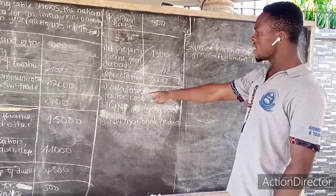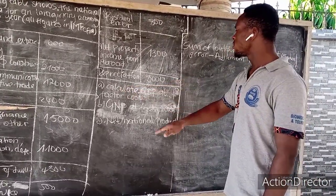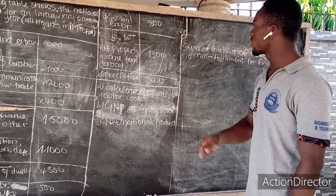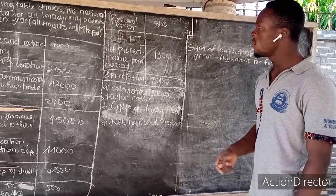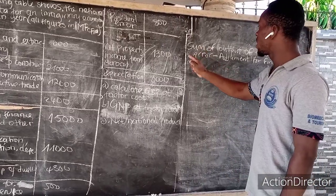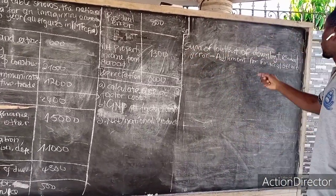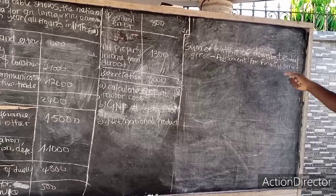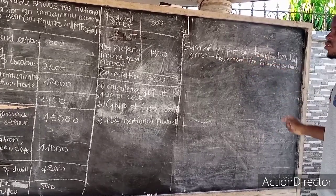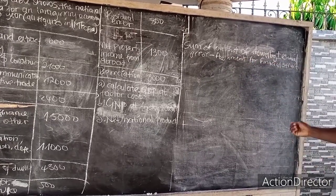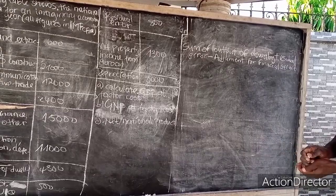For us to calculate the gross domestic product at factor cost, our formula is: the sum of output of all industries plus ownership of dwellings, plus or minus the residual errors, minus the adjustment for financial savings.